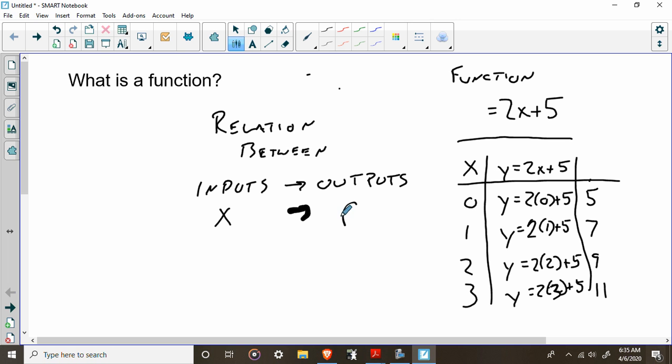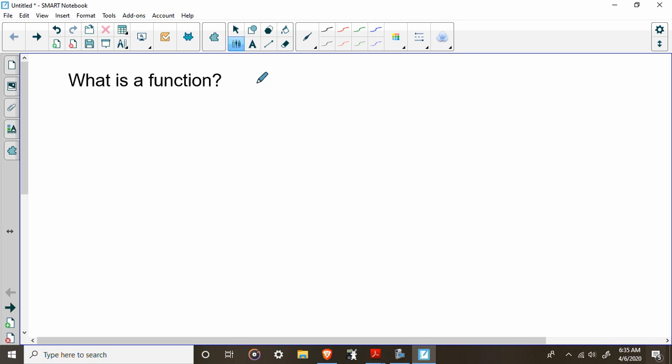We're going to call this F of X, F of X, F of X. All of these will now be F of X. So all that means is that we're saying this is a function. Now, we'll get to the rules of a function in a few days. I'll tell you briefly today. But essentially this, if I had, say, some Y is equal to 2X minus 3.